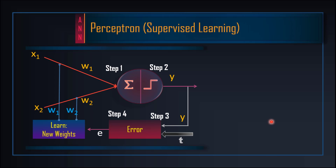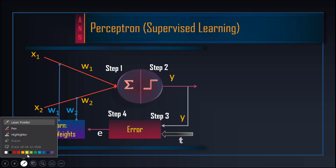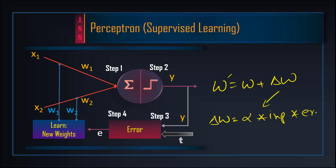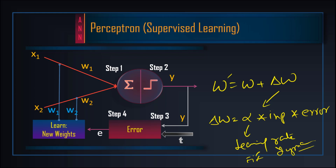Perceptron یا TLU based unit میں: Step 3 میں target value given ہوتی ہے، error نکالتے ہیں (t - y)، اور آخری step میں تمام weights کو modify کرتے ہیں۔ نئی weights = پرانی weights + delta w، جہاں delta w = alpha × input × error۔ Alpha یہاں learning rate ہے جو fixed یا dynamic ہو سکتا ہے۔ یہ process repeat کرتے رہتے ہیں جب تک neuron learn نہ کر لے۔ اگلی video میں اسی perceptron کو TLU کے ساتھ solve کر کے دکھائیں گے۔